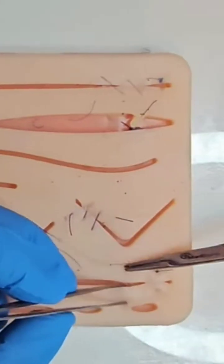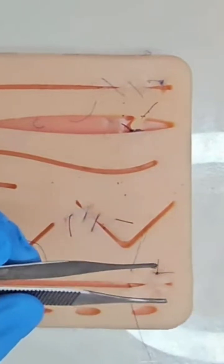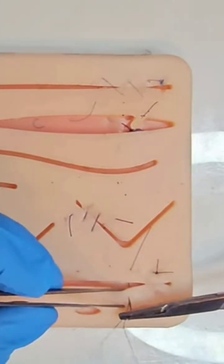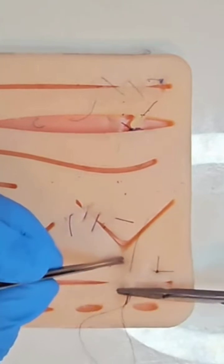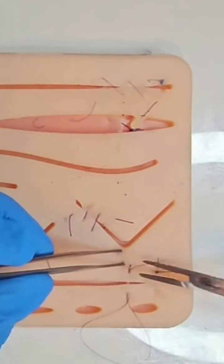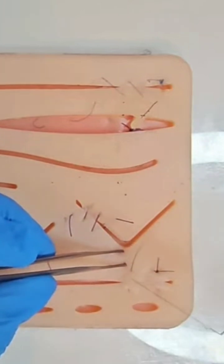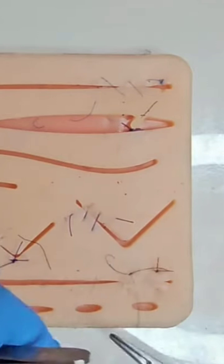The vertical mattress: here your third bite is directly in front of your second exit point, closer to the wound edge. The exit point is in front and in line with the first entry point. This is useful for wound eversion in smaller wounds.